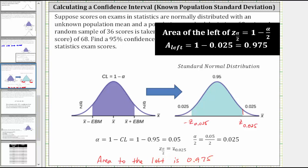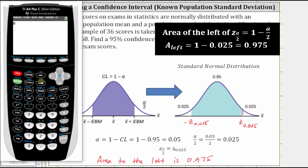And now we will find z sub 0.025 using the TI-84, as well as desmos.com. Going to the TI-84, we press the second vars for the distribution menu, option three for inverse norm. Area is the area to the left, which we know is 0.975. Because we're using the standard normal distribution to find the z-score, the mean is zero, and the standard deviation is one. The z-score is approximately 1.96.